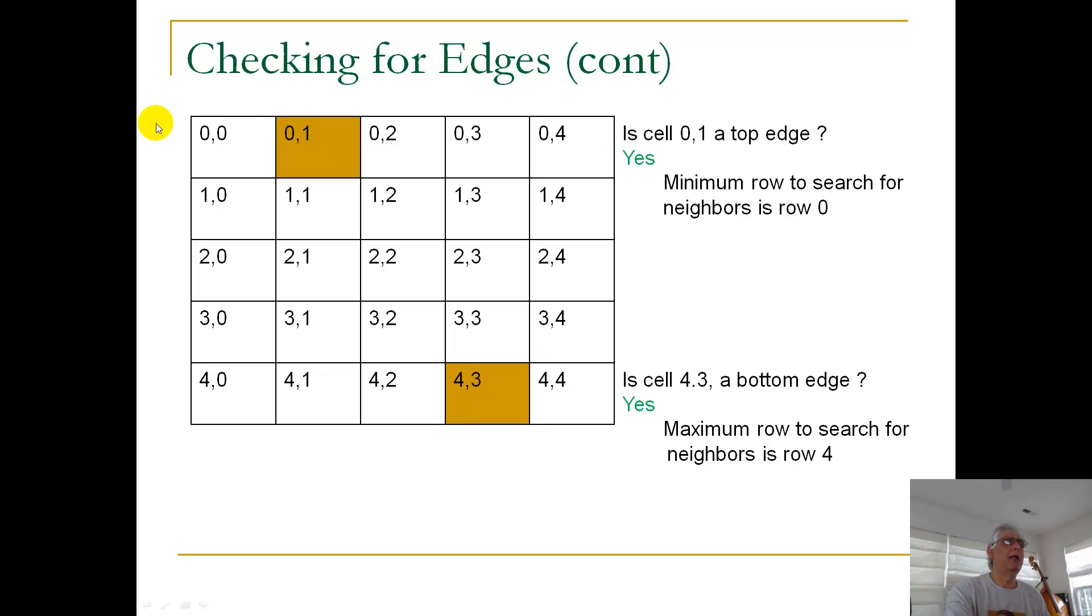Pretty easy. If I'm in row 0, I'm in a top edge, and it's as simple as that. So I just check the index, the indice, for the row. If it's 0, I say yes, I am in a top edge. And the minimum row where I can search for neighbors is row 0. I can't do the R minus, the row minus 1 thing, to check the row above, because there is no row above. I will get an array index out of bounds exception.